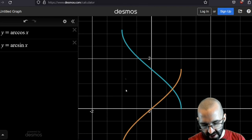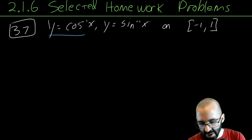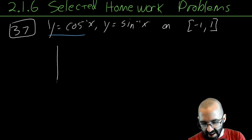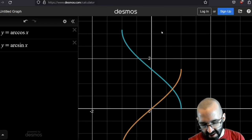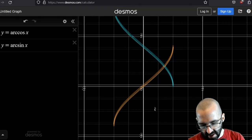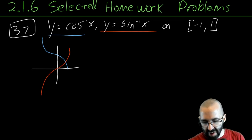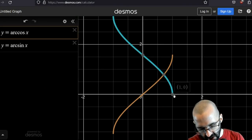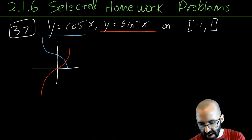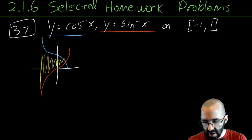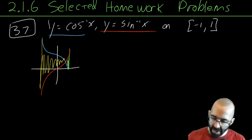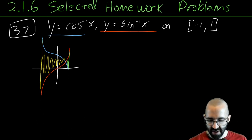We're looking at this area. Blue is inverse cosine, drawn like this going downward; orange/red is inverse sine, directly below it, going through the origin. From x equals negative one up to positive one, we're going to look at this yellow area and add it to this green area. We can do this in terms of x or in terms of y.